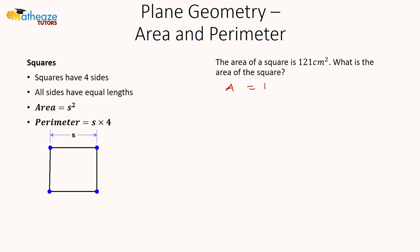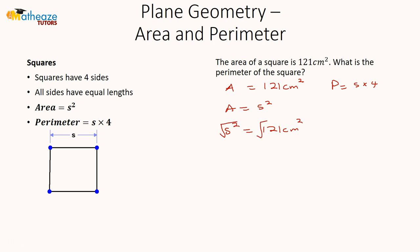Now the area of a square is 121 square centimeters and we want to find the perimeter. The perimeter is side times 4, and the area is side squared. We substitute: side squared equals 121 square centimeters. Taking the square root of both sides, the side is 11 centimeters. Therefore, the perimeter is 11 centimeters times 4, which is 44 centimeters.